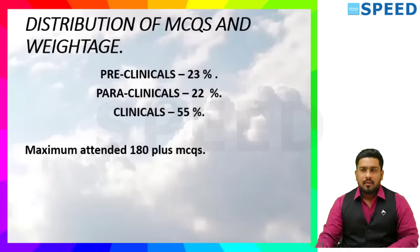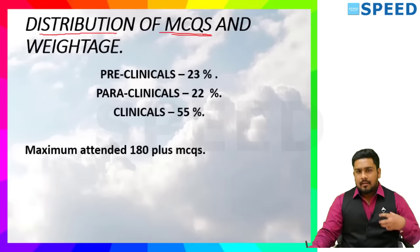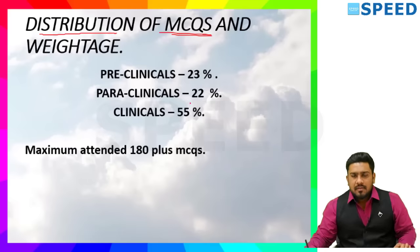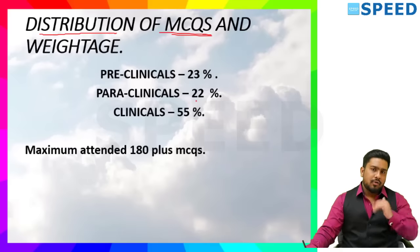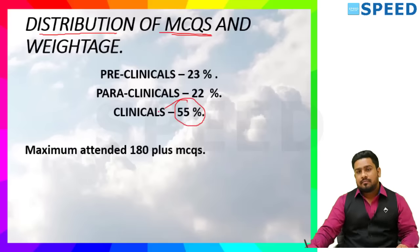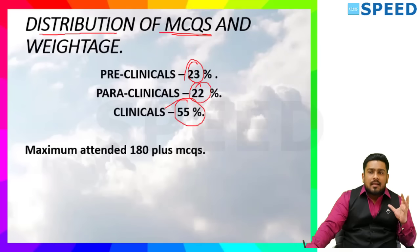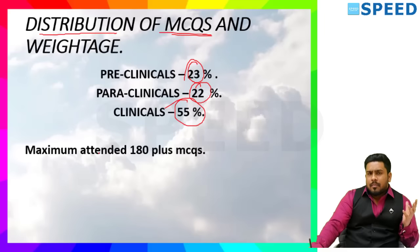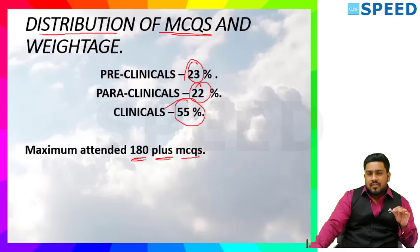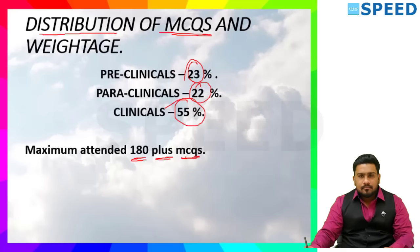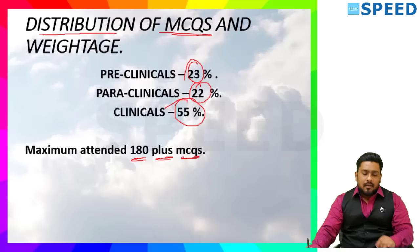Getting into the NEET PG May 2022, the distribution of MCQs from preclinical, paraclinical, and clinicals: compared to the INISS PG May 2022 exam, here clinical is very much more. Paraclinical is less than 22% and preclinical at 23%. If you had a good grasp on clinicals, there is a high possibility of getting a seat. Maximum number of people from the poll of 1 lakh attended 180 plus MCQs — the majority went aggressive towards 180.